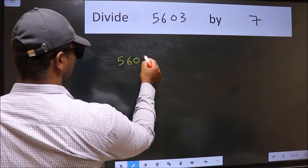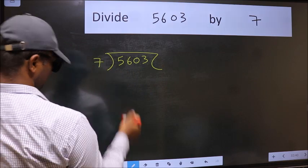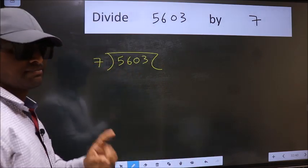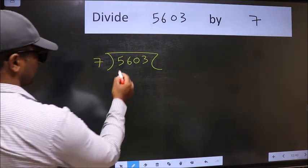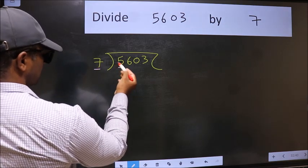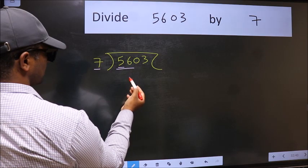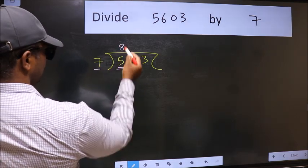5603 and 7 here. This is your step 1. Next, here we have 5 and here 7. 5 is smaller than 7, so we should take two numbers, 56. When do we get 56 in 7 table? 7 times 8, 56.